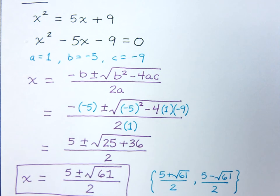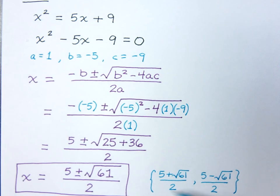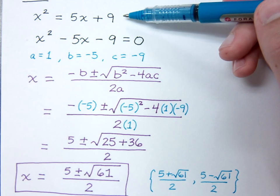Now, I know these answers are not very pretty, but there is one thing to notice here. They are real numbers. The square root of 61 is real. Even though it is irrational, it is real. So, these are two real solutions to the quadratic equation x squared equals 5x plus 9.